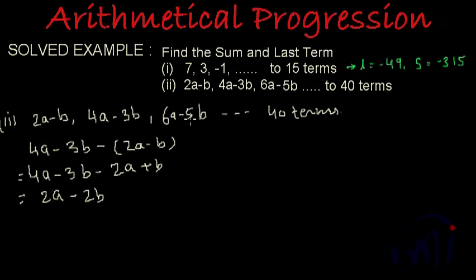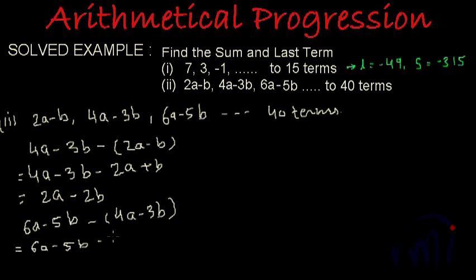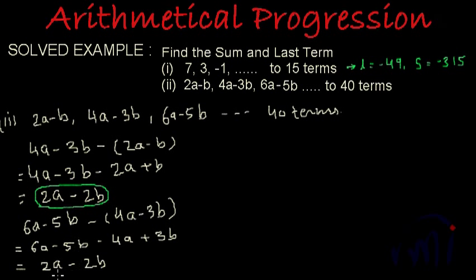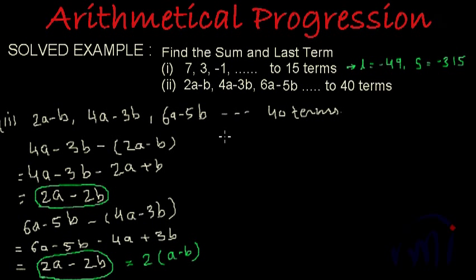Now we find the difference between the third and second terms: (6a minus 5b) minus (4a minus 3b). Opening the bracket gives 6a minus 5b minus 4a plus 3b. This equals 2a minus 2b. Here also we get the same difference, 2a minus 2b, which can be written as 2 multiplied by (a minus b). So the common difference d equals 2(a minus b).